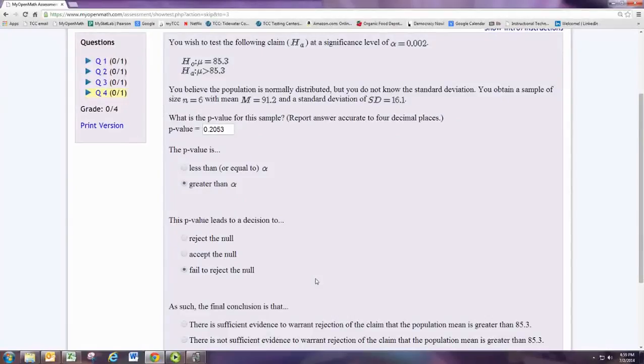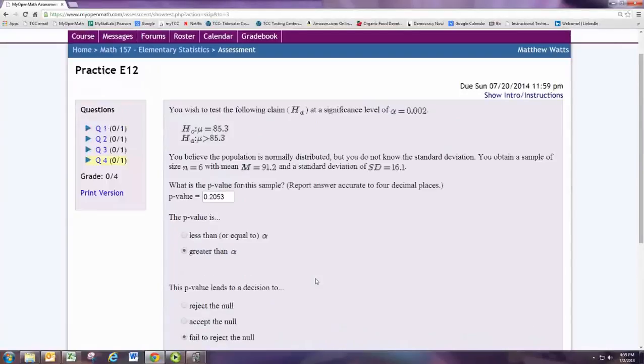When we fail to reject the null, there is not sufficient evidence to warrant rejecting the null. Or in this case, supporting the claim. Remember that rejecting the null always supports the alternative. So when the claim is the alternative, rejecting the null supports the claim.